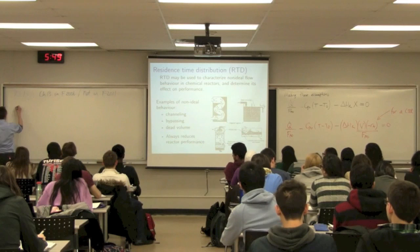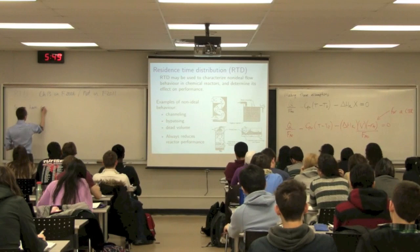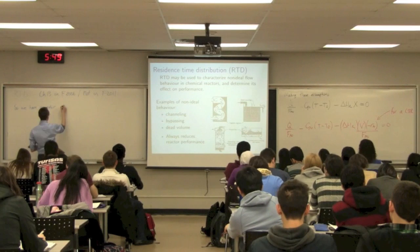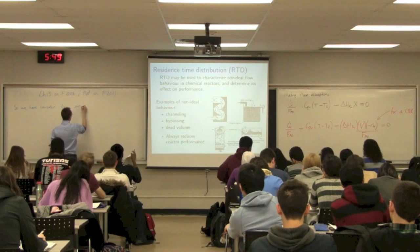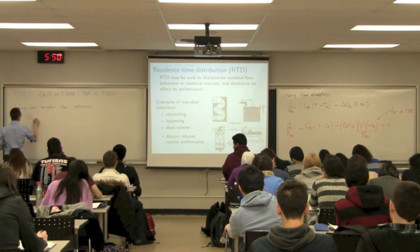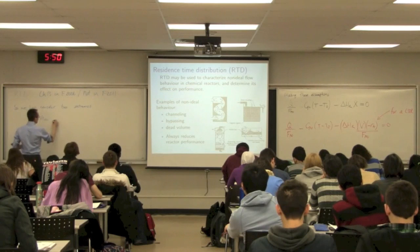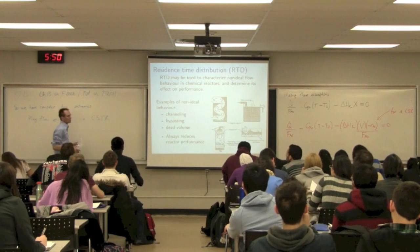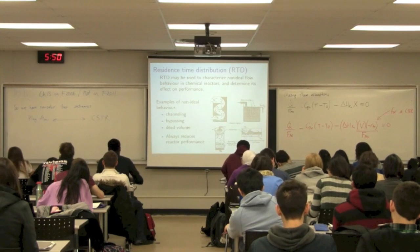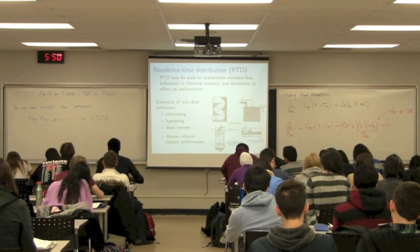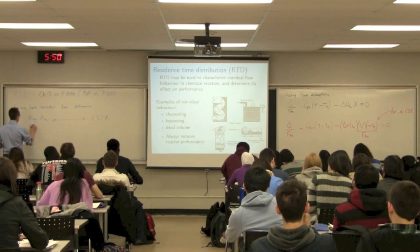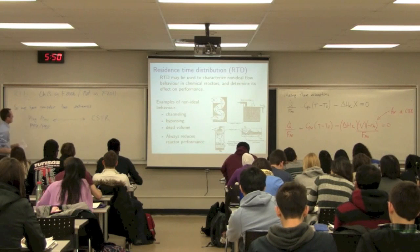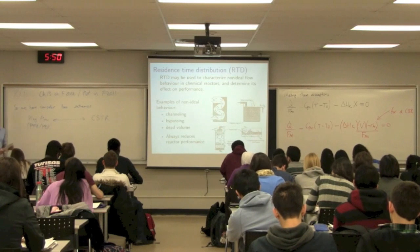So we've considered, so far, we've considered two very ideal types of reactors, essentially two extremes. On the one hand, we've considered plug flow reactors, and all the way out the other end of the spectrum is the CSTR. A batch reactor really is a CSTR, but with the inlet and outlet closed up. Plug flow reactor, that's a PFR. It's also a PBR. So those two represent real extremes in terms of operation.